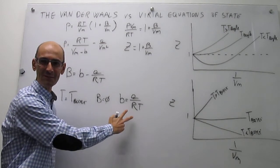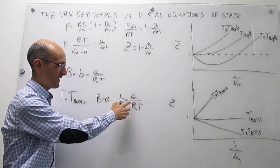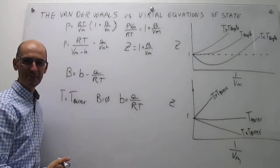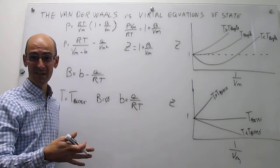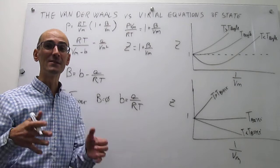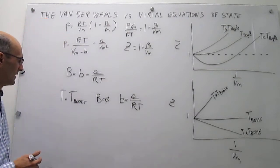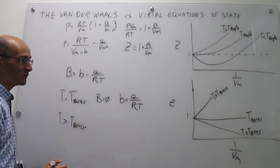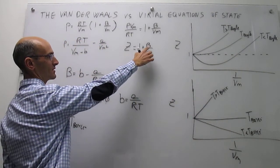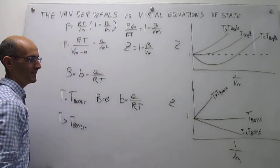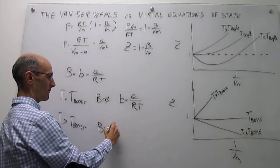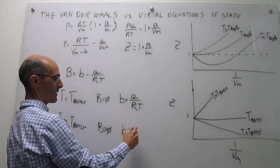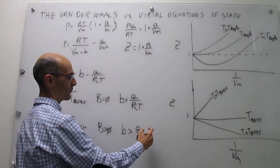According to the van der Waals equation of state, when B equals zero, the relationship between the van der Waals parameters a and b must satisfy b equals a over RT — that equilibrium point defines the Boyle temperature. At a temperature higher than the Boyle temperature, repulsions dominate, the B coefficient is positive, and the van der Waals parameter b must be larger than a divided by RT.